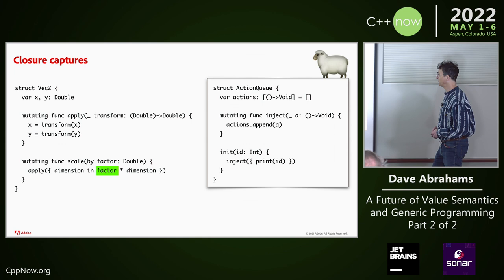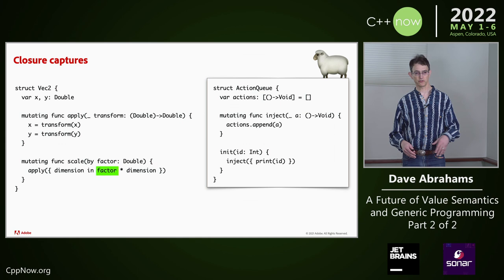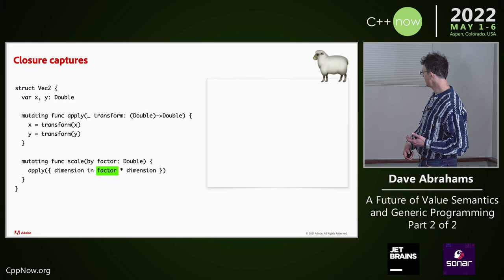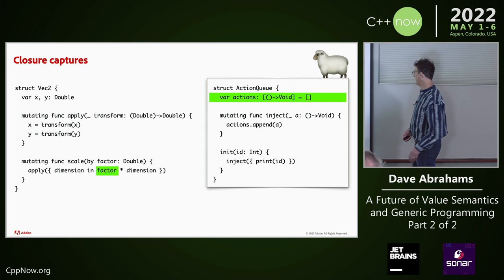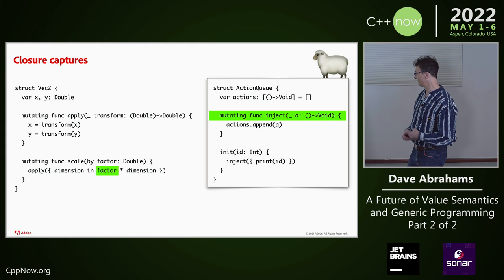This is action queue. Action queue is just built around a collection of closures — an array of closures. There's my array of closures. We have this inject method that sticks a new closure in that array of actions — we're just appending it. And the initializer for action queue, for whatever reason, injects a closure that prints its identifier into the action queue. So the first action for any action queue is to print out its identifier.